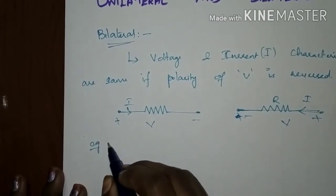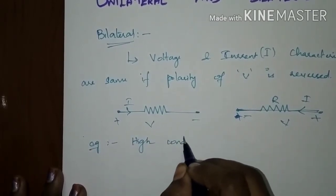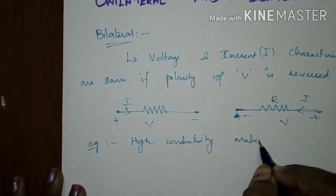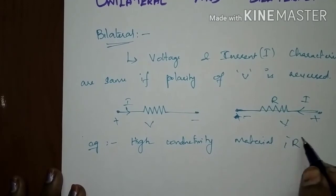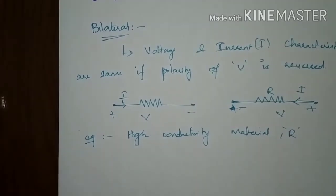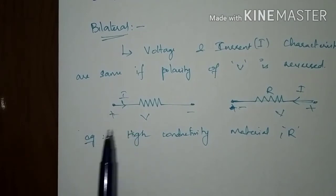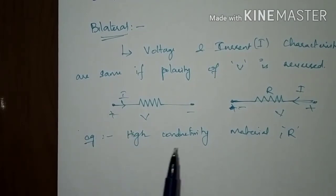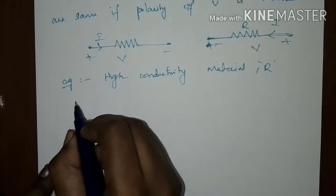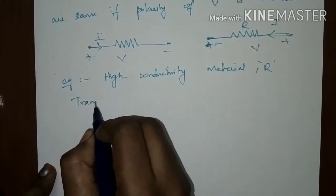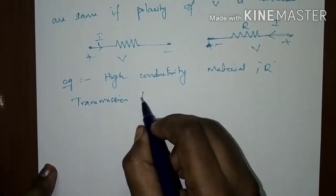Examples of bilateral elements include high conductivity materials and resistance. If you reverse the supply, the voltage and current relationship remains the same. Another example of a bilateral element is a transmission line, which exhibits the property of being bilateral.